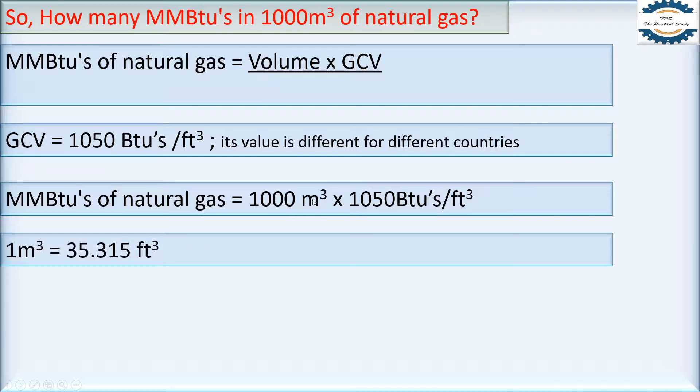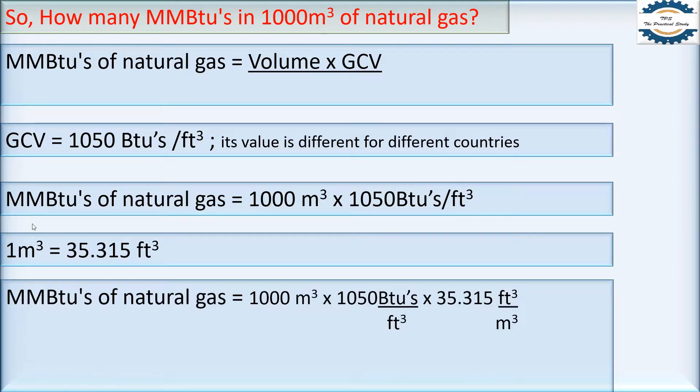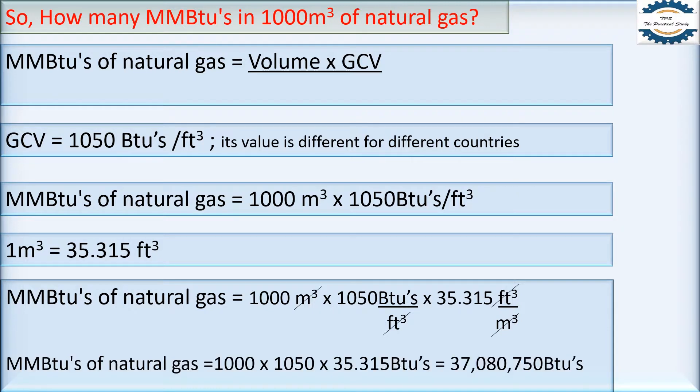So we know one meter cube is equal to 35.315 feet cube. So multiplying this volume, we will balance our volume. So this meter cube will be cancelled by this meter cube. This feet cube will be cancelled by this feet cube. Now after multiplying these three values, we will get answer in only BTU's. So we have 37,080,750 BTU's, but we need to convert BTU's into MMBtu's.